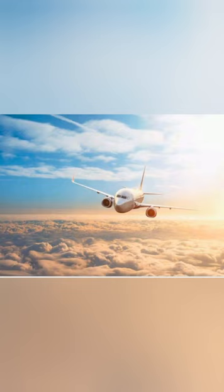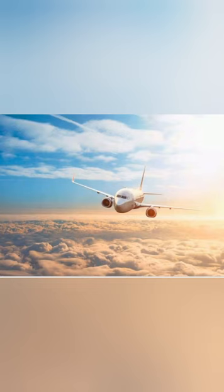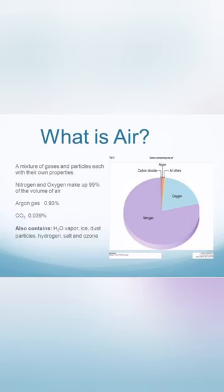Air is our first and basic necessity of life. We as humans can't live without air and water, but we need to study about air. As we all know, air is very essential for our survival and all living things need air to live. Humans and animals inhale oxygen and exhale carbon dioxide. However, plants need carbon dioxide to carry out the process known as photosynthesis — meaning they make their own food with the help of carbon dioxide. But what is air? Air is a mixture of invisible gases and particles, each with their own properties.